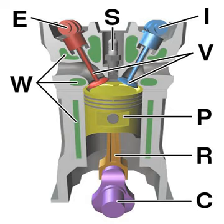In an internal combustion engine, the expansion of the high temperature and high pressure gases produced by combustion applies direct force to some component of the engine. The force is applied typically to pistons, turbine blades, rotor or a nozzle. This force moves the component over a distance, transforming chemical energy into useful mechanical energy.